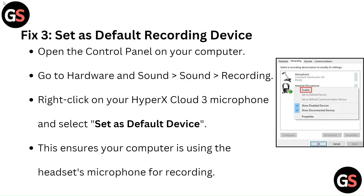Fix 3: Set as default recording device. Open the Control Panel on your computer. Go to Hardware and Sound, then Sound, then Recording. Right-click on your HyperX Cloud3 microphone and select 'Set as Default Device.' This ensures your computer is using the headset's microphone for recording.